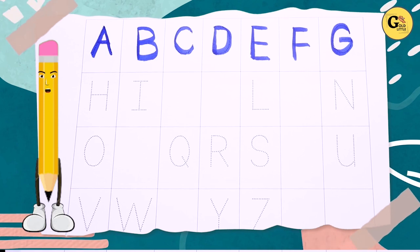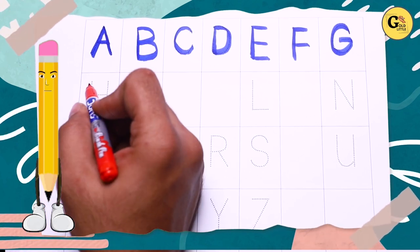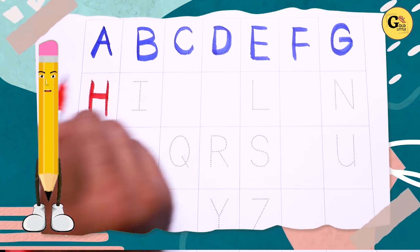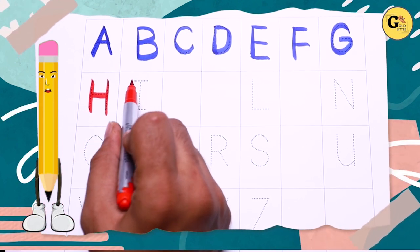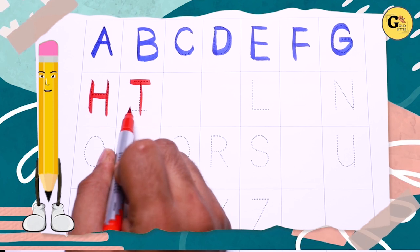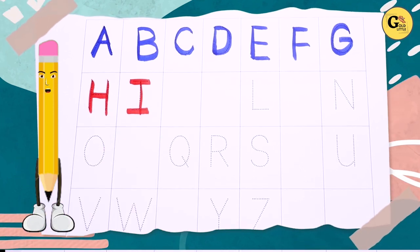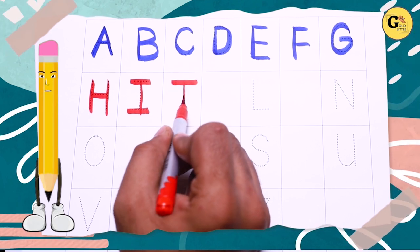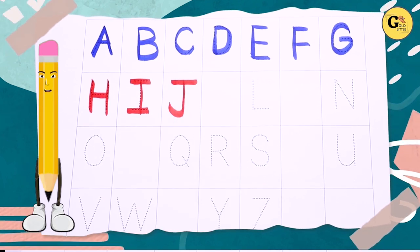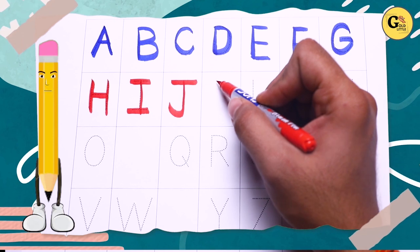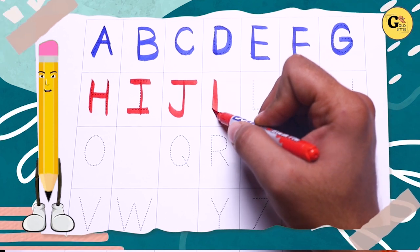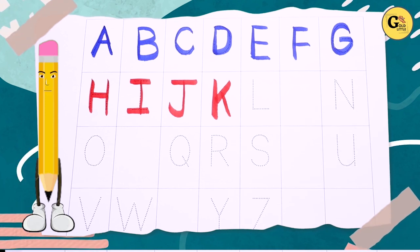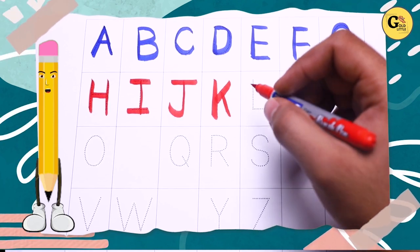Red color. H. Red color H. What is I? Red color I. What is next? J. Red color J. What is next? Tell me K. Red color K. What is next?